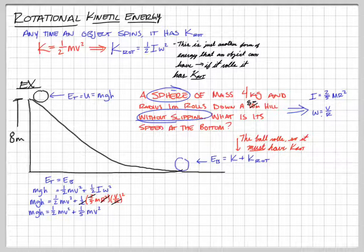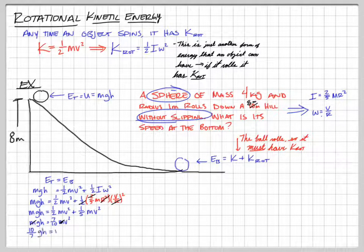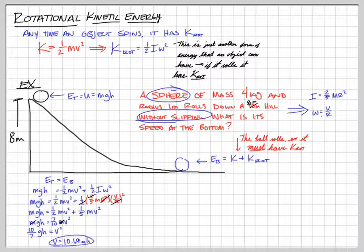We can combine those terms. The lowest common denominator is 10, so MGH equals seven-tenths MV squared. The M's cancel out, and dividing through gives us ten-sevenths GH equals V squared. Plugging in our numbers, that velocity comes out to be about 10.7 meters per second — that's how fast the ball is going at the bottom when it rolls.